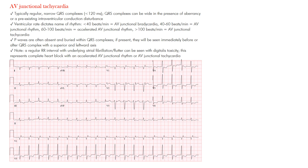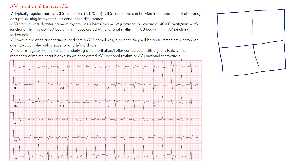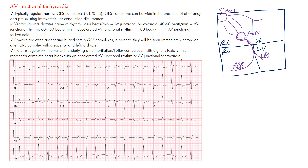AV junctional tachycardia. We've gone through a number of junctional rhythms, all originating from the AV nodal junctional region. If we draw our box diagram to refresh ourselves: here's the right atrium, left atrium, right ventricle, and left ventricle. We have our sinus node, internodal fibers coming to the AV node, and a Bachmann bundle going to the left atrium. From the AV node, the HIS bundle gives off the right bundle branch.